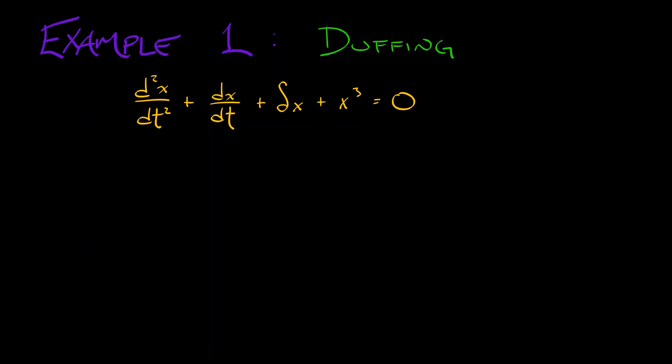This delta is a parameter. When we convert this to a first order system, there was clearly an equilibrium at the origin. The derivative at the origin is given by zero, negative delta, one, negative one.